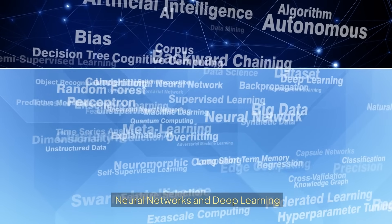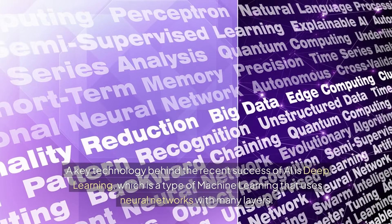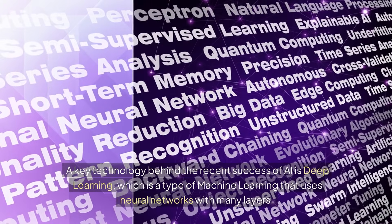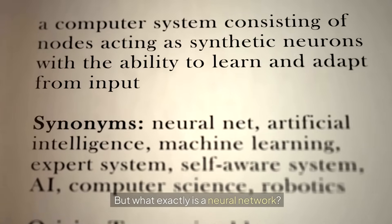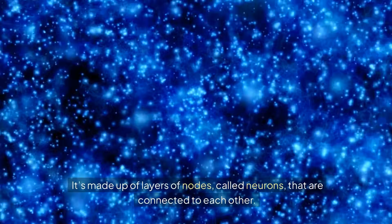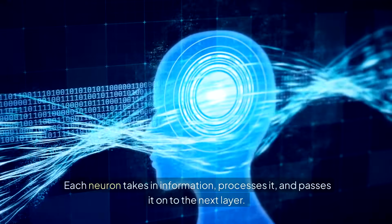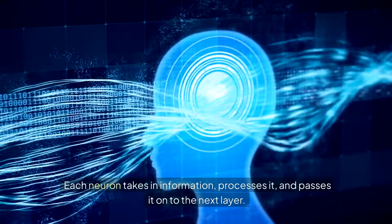Neural networks and deep learning: a key technology behind the recent success of AI is deep learning, which is a type of machine learning that uses neural networks with many layers. But what exactly is a neural network? Imagine a neural network as a simplified model of the human brain. It's made up of layers of nodes called neurons that are connected to each other. Each neuron takes in information, processes it, and passes it on to the next layer. The more layers there are, the more complex patterns the network can recognize.